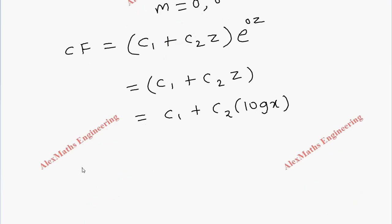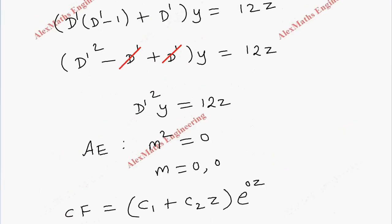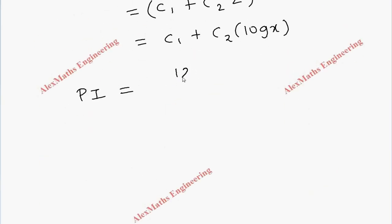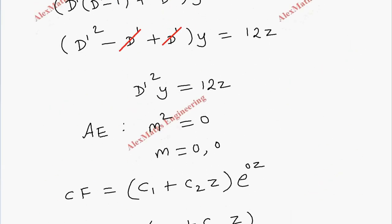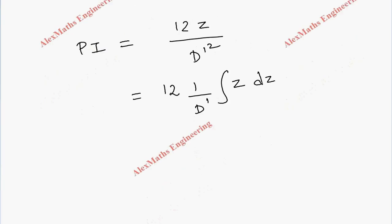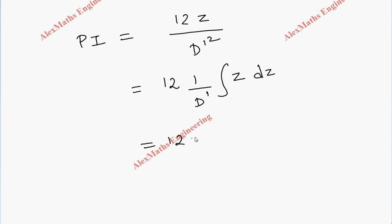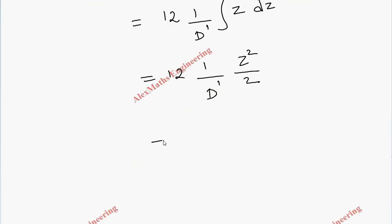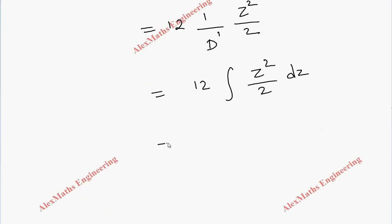The next part is the particular integral. The right-hand side is 12z, so PI = 12z / D-dash². Since 1/D-dash represents integration once and 1/D-dash² represents integrating twice, we first integrate z once: 1/D-dash of z = z²/2. Then integrating again: integration of z²/2 with respect to z gives z³/6. Multiplying by 12: 12 × z³/6 = 2z³.